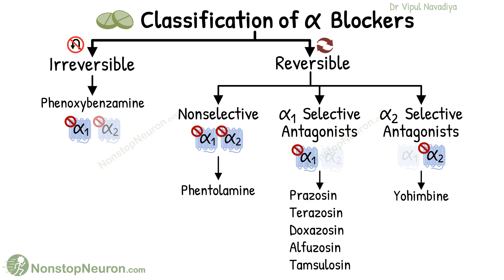So these are the alpha blockers. If you are curious about the receptor selectivity of phenoxybenzamine, it is somewhat selective for alpha-1, but it has some activity on alpha-2 as well.